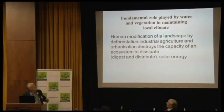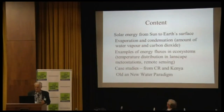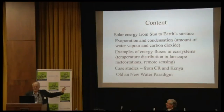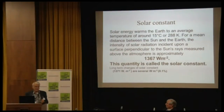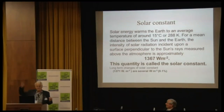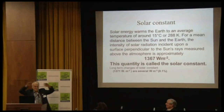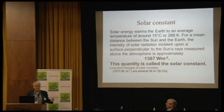The fundamental role of water and vegetation in maintaining local climate: we will look at the amount of solar energy we are getting, how we distribute this energy, and the effect of landscape management. There is a term called the solar constant — from a constant distance from the sun, the amount of energy is plus or minus constant at 1,367 watts per square meter.